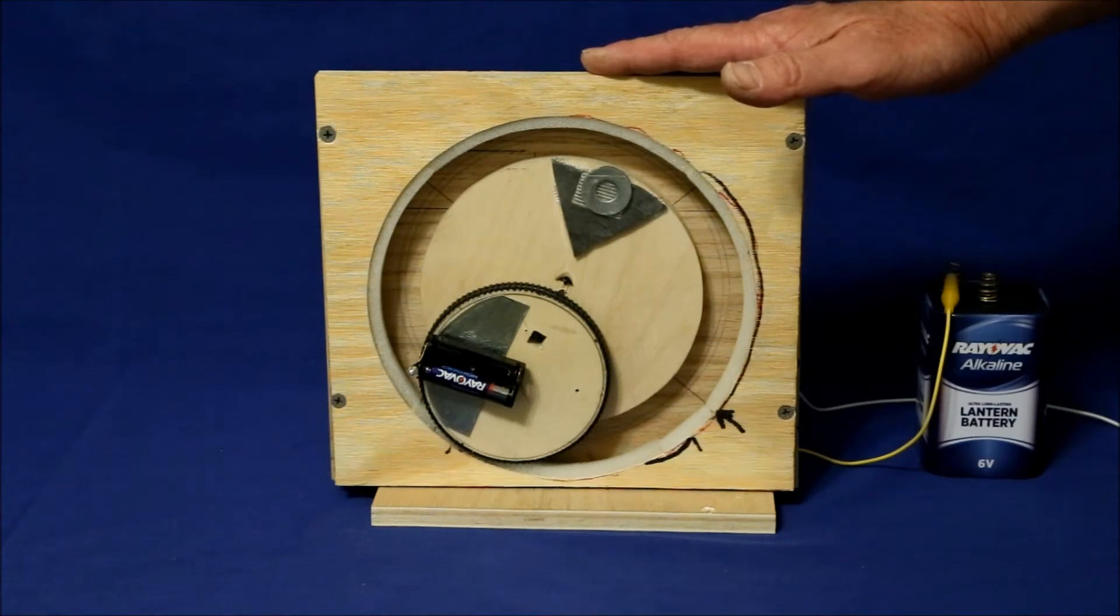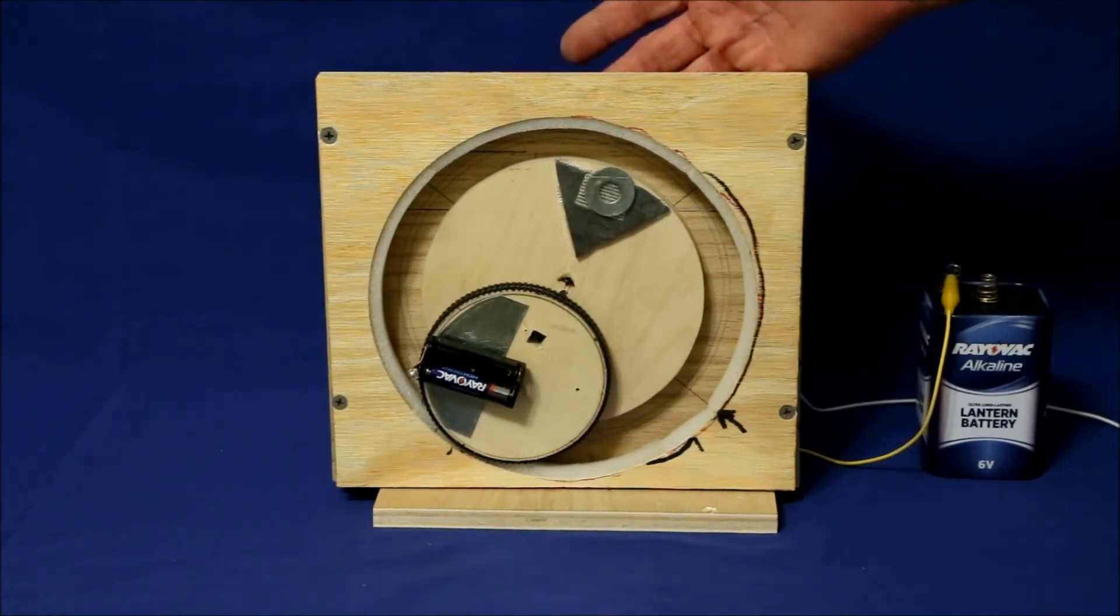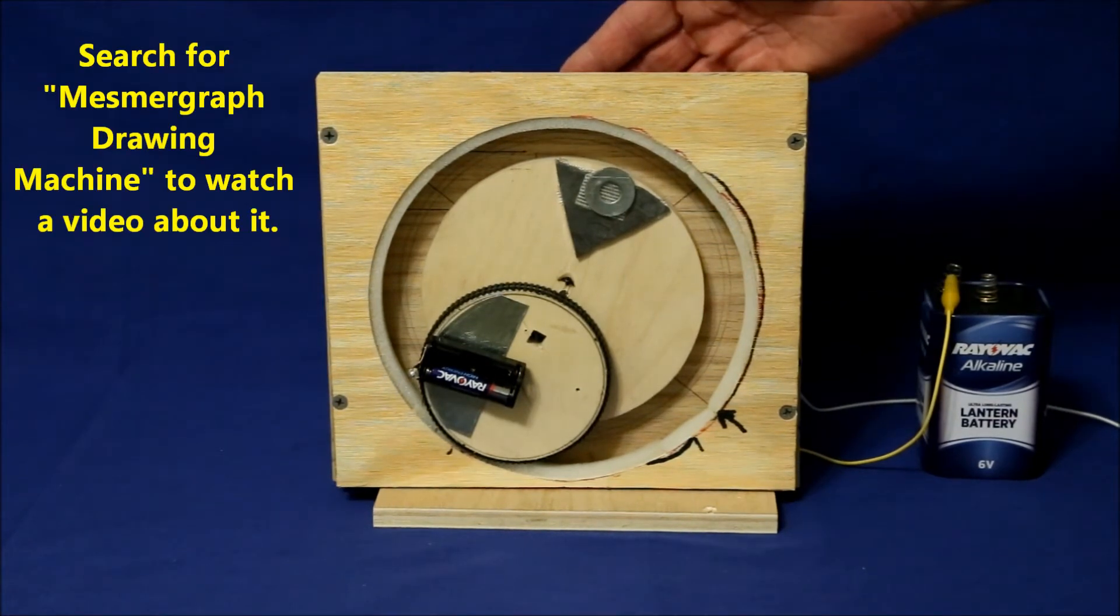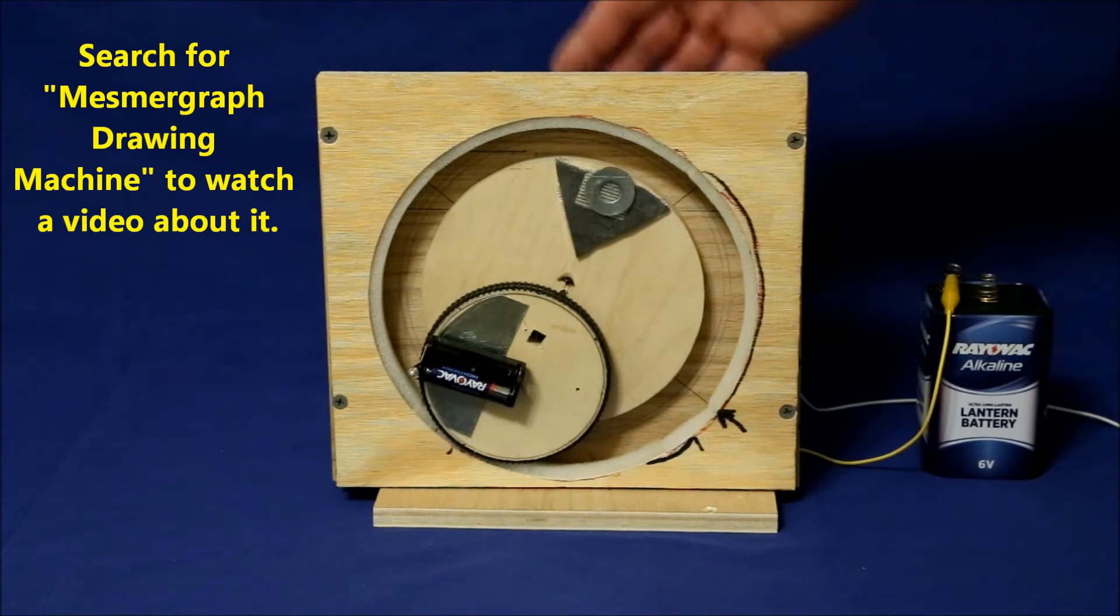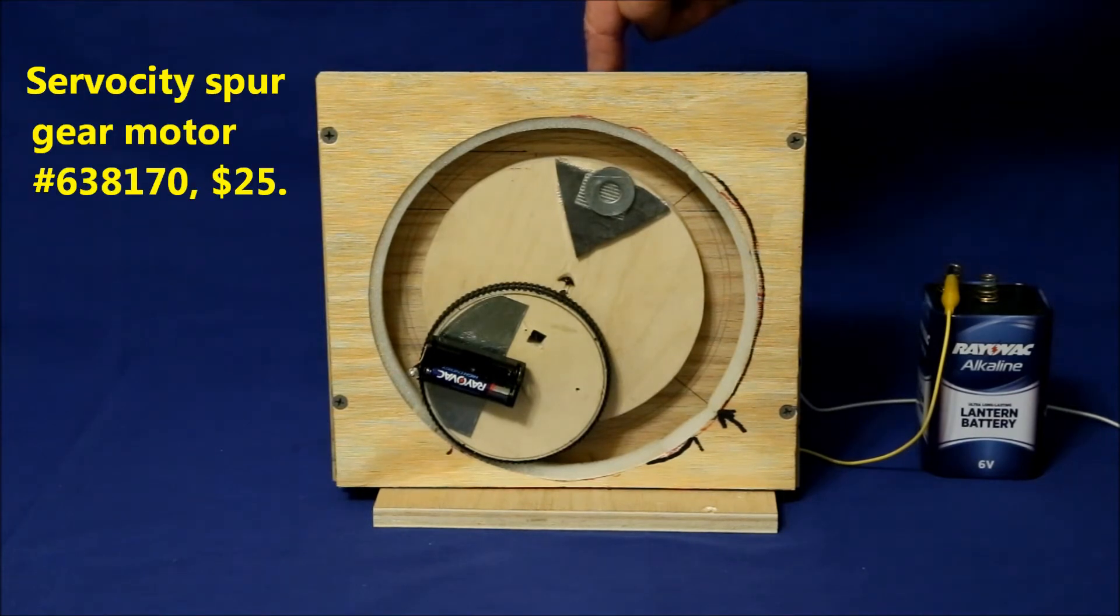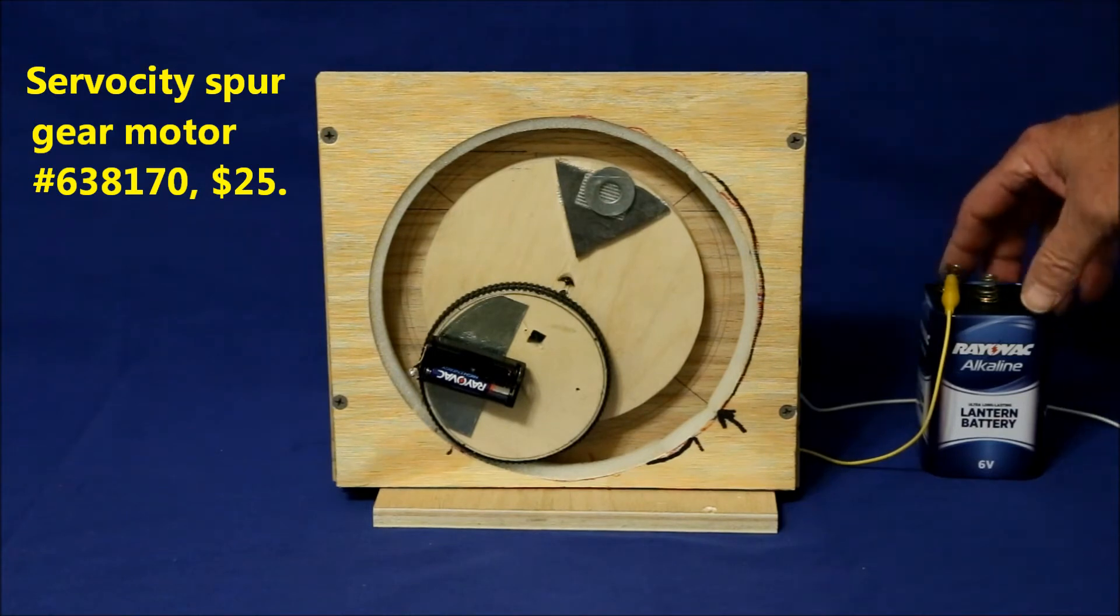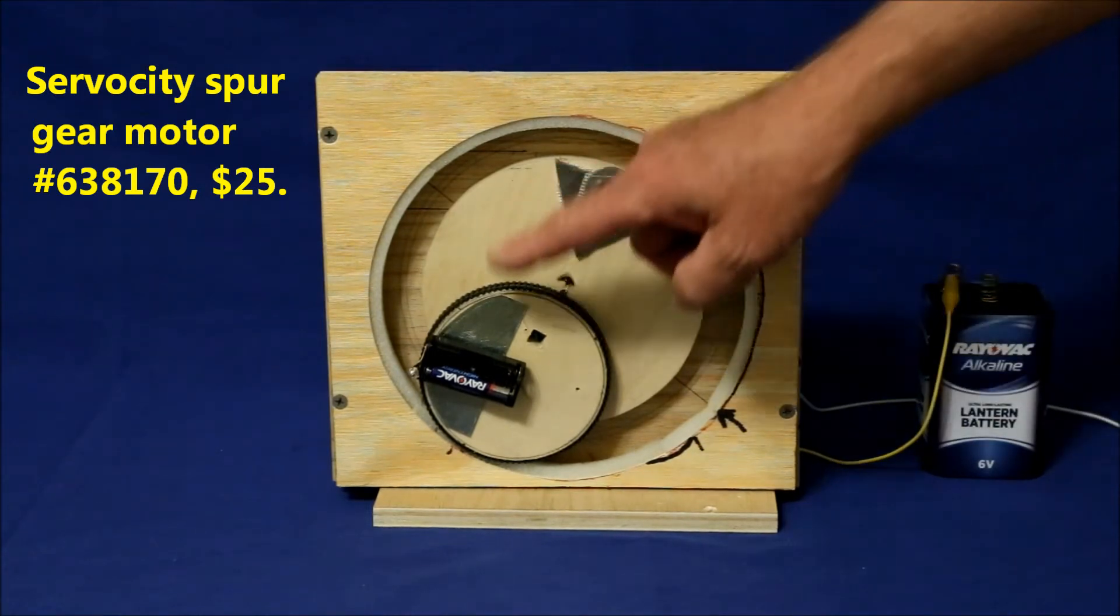Mechanically, it's identical to the mesmograph drawing machine except that it's much smaller. In the back is a 12 volt DC gear motor powered by a 6 volt battery to drive the main disc at 5 RPM.